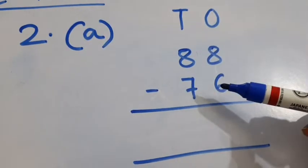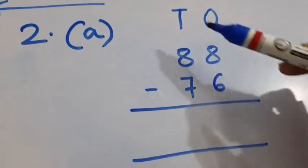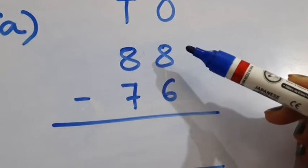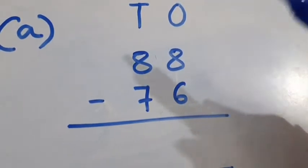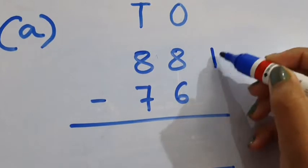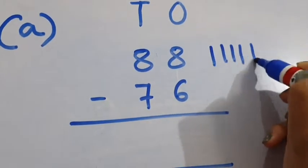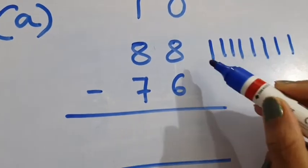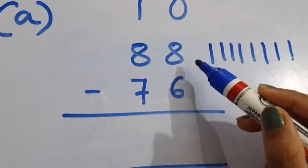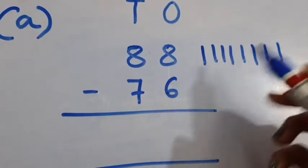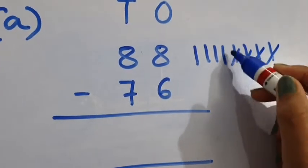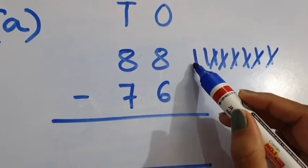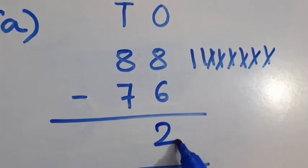88 minus 76. This is the 1's column and this is the 10's column. In the 1's column, the numbers are 8 minus 6. Draw 8 vertical lines and out of these 8 vertical lines, we have to remove 6 lines. So how many lines are left? 2. So we will write 2 here.